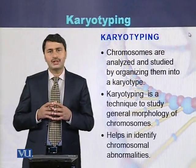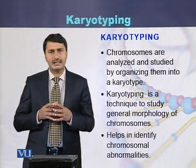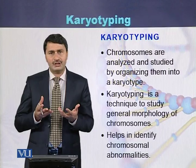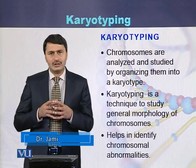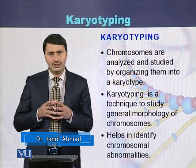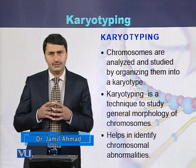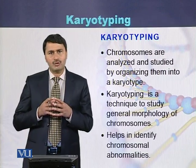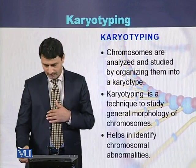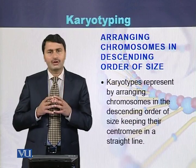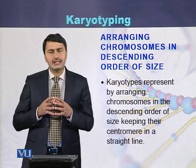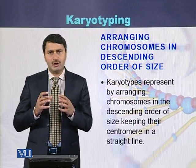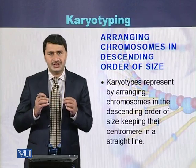Chromosomes can be analyzed and studied by arranging them in the form of a karyotype. Karyotyping is used to study the morphology of the chromosomes and helps in identification of chromosomal abnormalities. Chromosomes are arranged in descending order by placing the position of the centromere in a straight line.